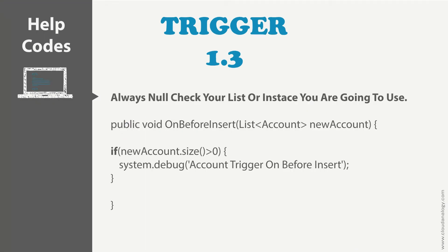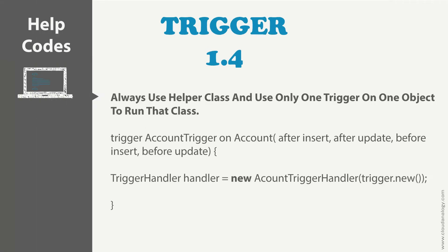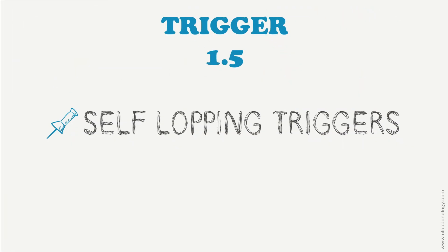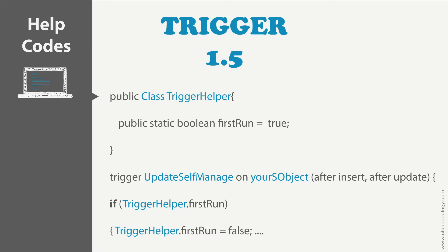The third point is null check. This is a very basic check which every developer learns in the course of testing triggers they developed. The fourth point is one trigger for one object. Creating multiple triggers on the same object will cause warnings in Checkmarks code review for AppExchange. The fifth point is self-looping triggers — beware of this and make sure you use a static field in a class to verify the trigger is not getting called multiple times.